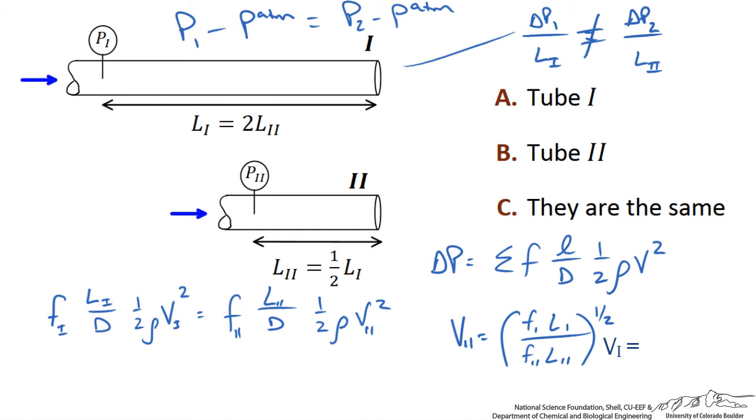Now, we know the relationship between L1 and L2. This basically boils down to the square root of 2 times V1. Now, that assumes that the frictional factor for the first pipe is equal to that of the second pipe.